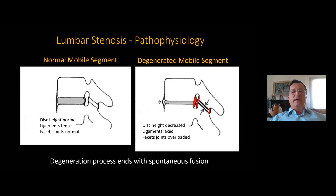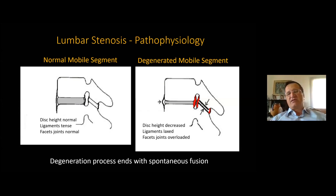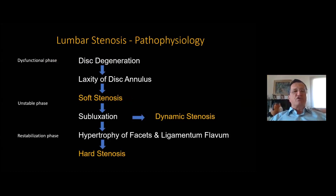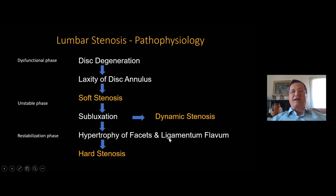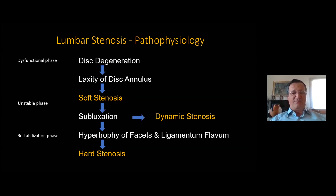In the mobile motion segment, you can see the ligaments lax, facet joints are overloaded, and disc height is decreased. In the pathophysiology we can identify a period of soft stenosis, then dynamic stenosis with subluxation, and hypertrophy of facets and buckling of the ligaments. There is in fact no real hypertrophy of the ligaments — because of their buckling, it appears hypertrophic. The ligaments cannot truly grow over time. Then a hard stenosis phase can be considered.